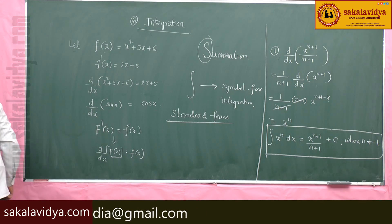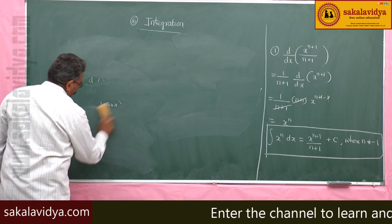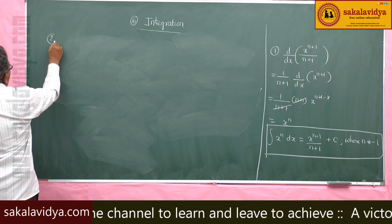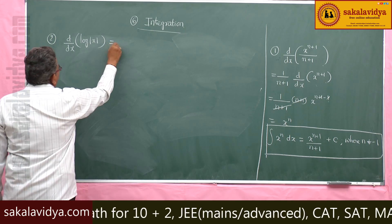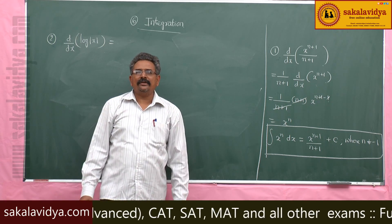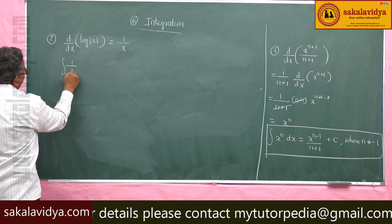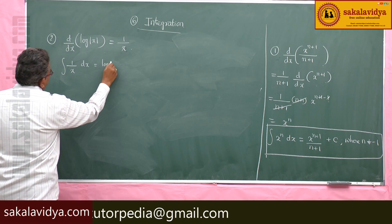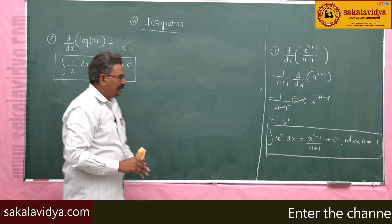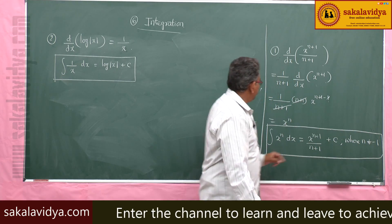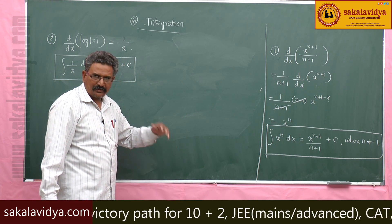Second: d by dx of log mod x equals 1 by x. The derivative of log mod x is 1 by x. Therefore, integral of 1 by x dx equals log mod x plus c. This means indirectly, if n equals minus 1, x to the power n becomes x to the power minus 1, which is 1 by x, and its integral is log mod x plus c.